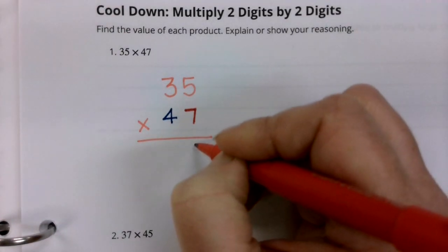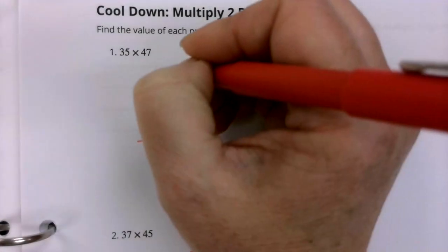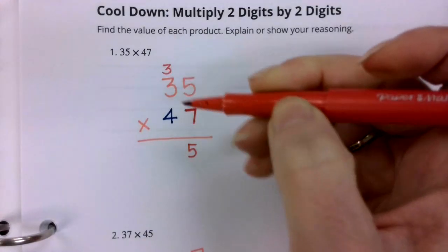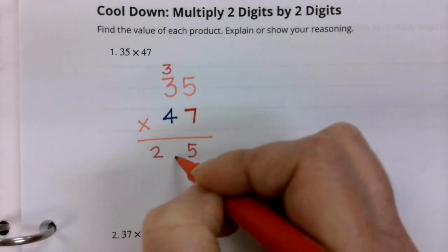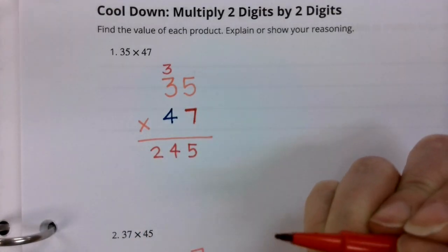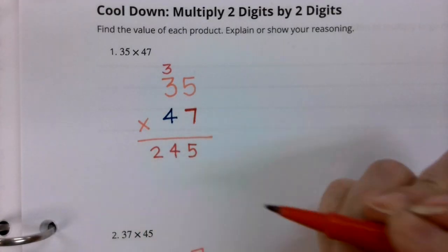Seven times five is 35. So I'm going to write down my five and carry that three. Seven times three is 21 plus three more is 24. Now let's be very clear. This is a partial product.